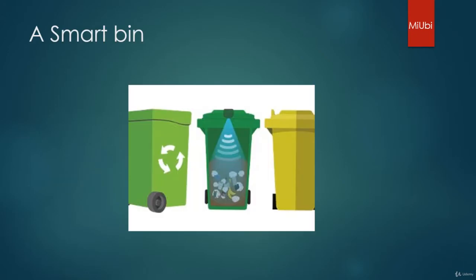Now we'll see a few popular IoT applications in the market. First of all, when we say Internet of Things, any application which comes to mind is a smart bin. A smart bin is such a bin which has a sensor that tries to find out the level of the trash can — the amount of trash which is present in it.